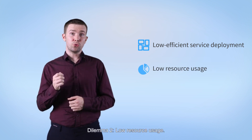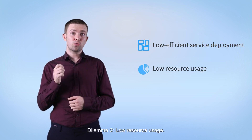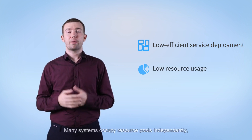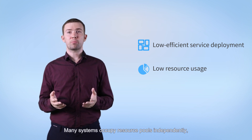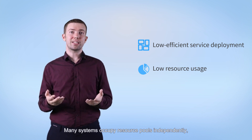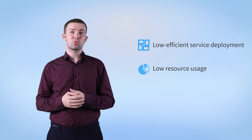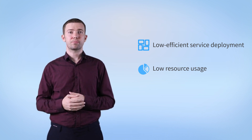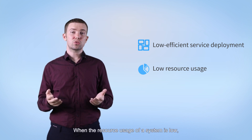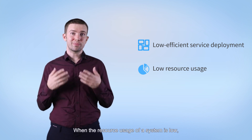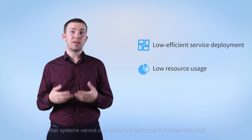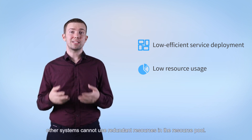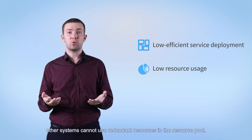Dilemma two: low resource usage. Many systems occupy resource pools independently, resulting in silo resource pools. When the resource usage of a system is low, other systems cannot use redundant resources in the resource pool.